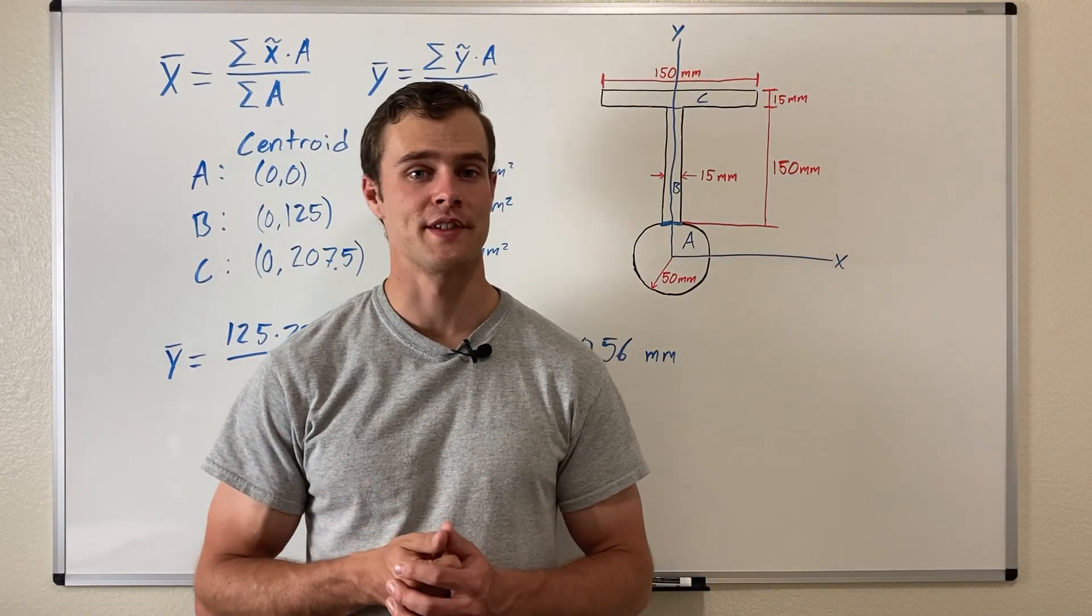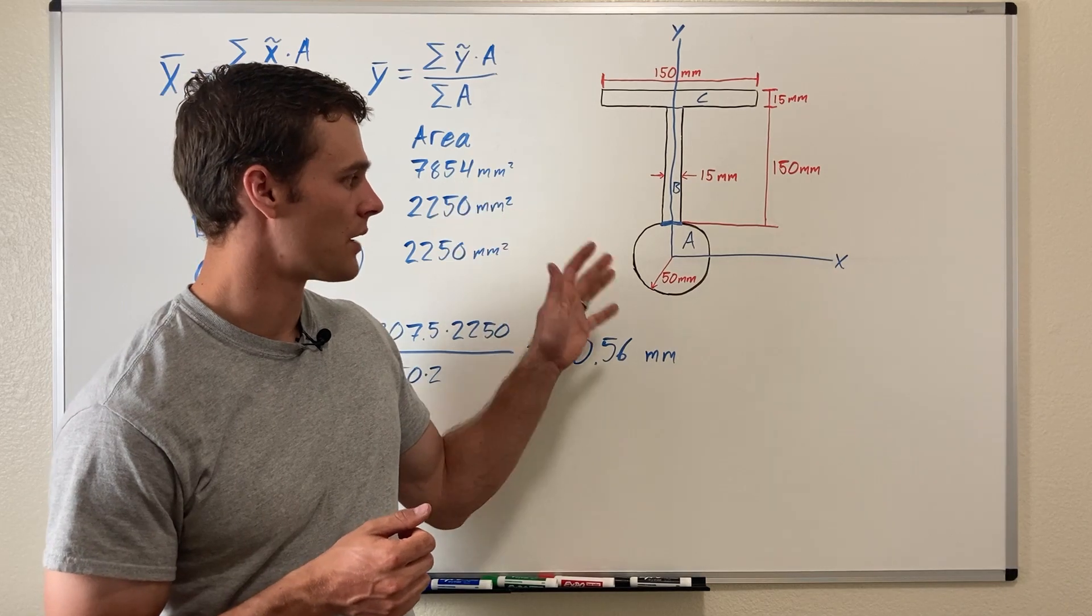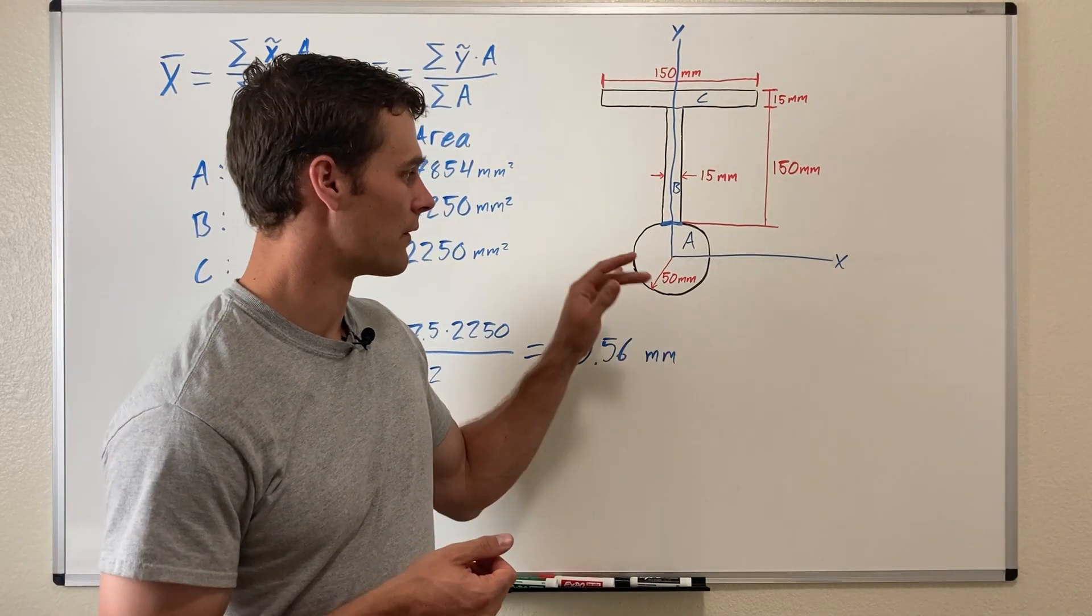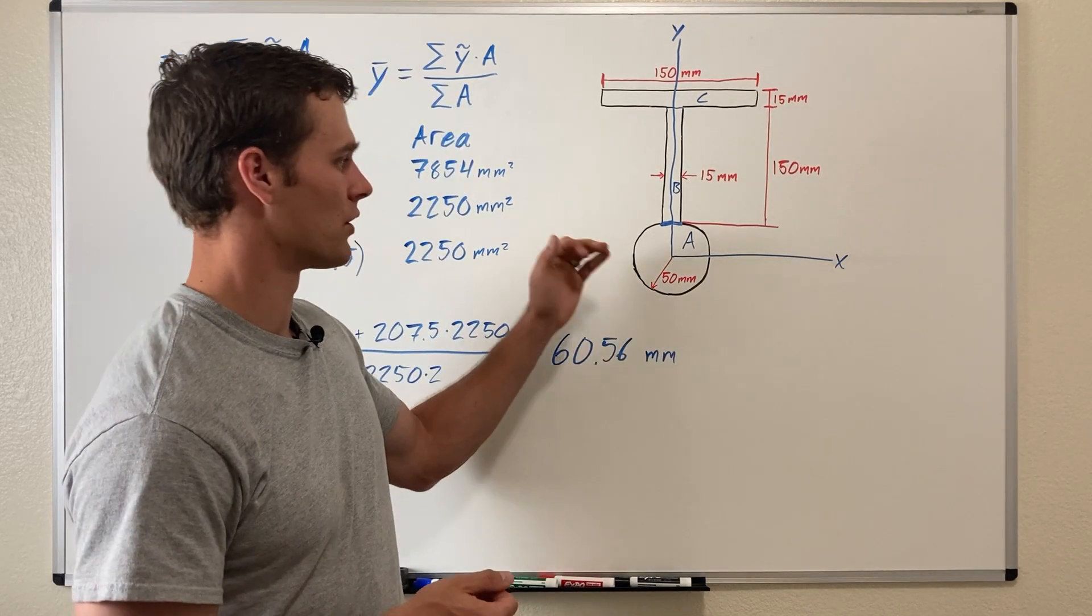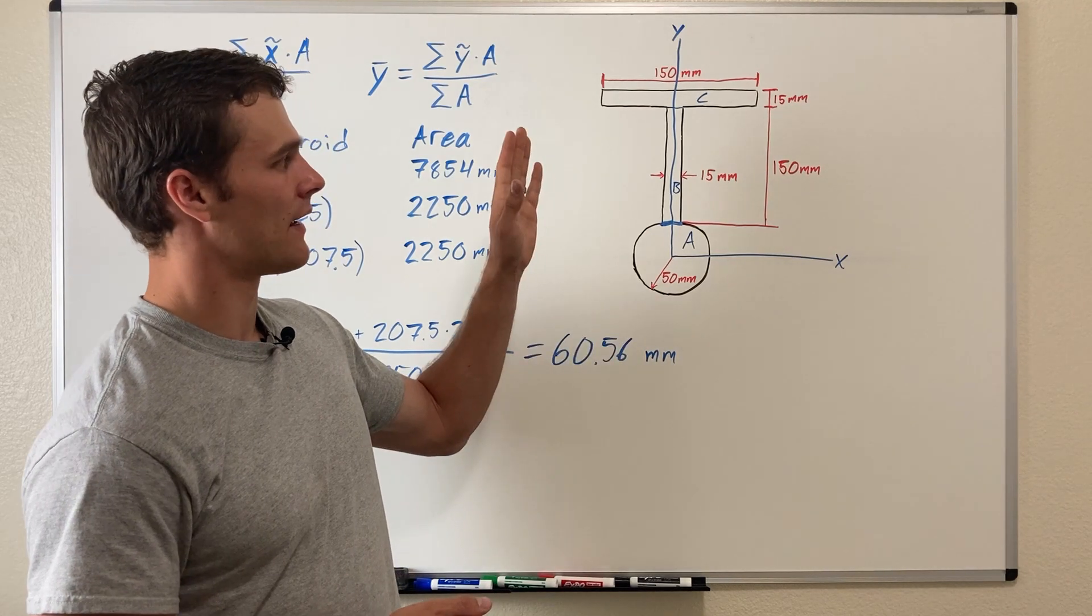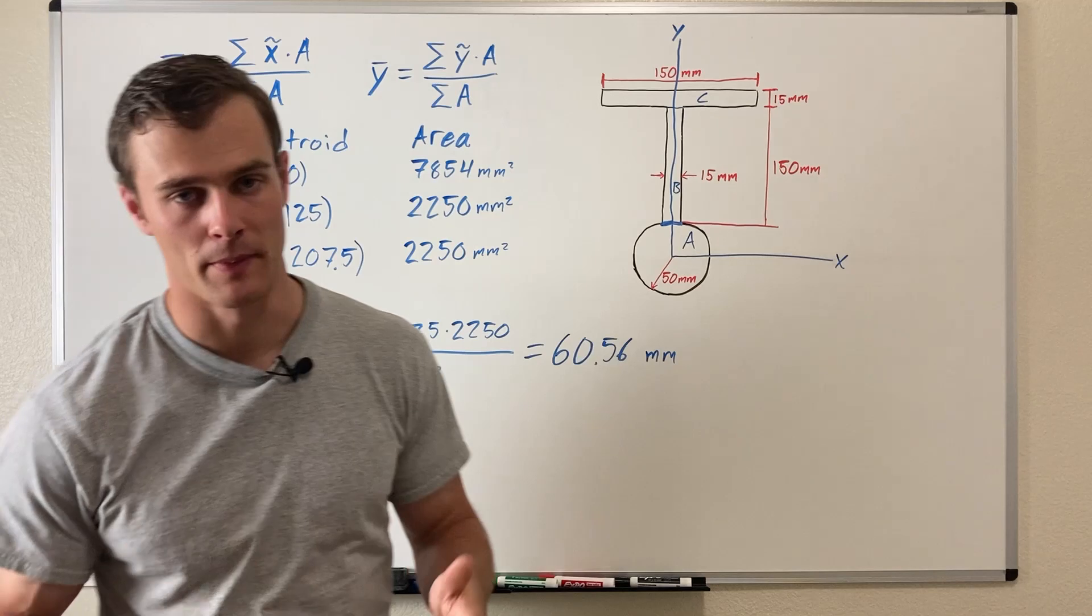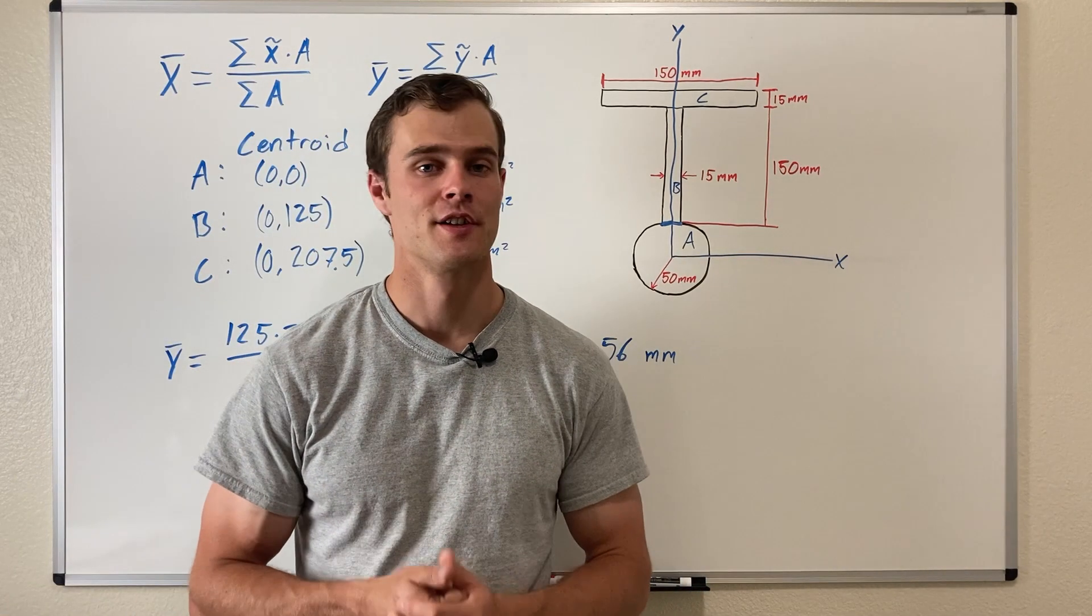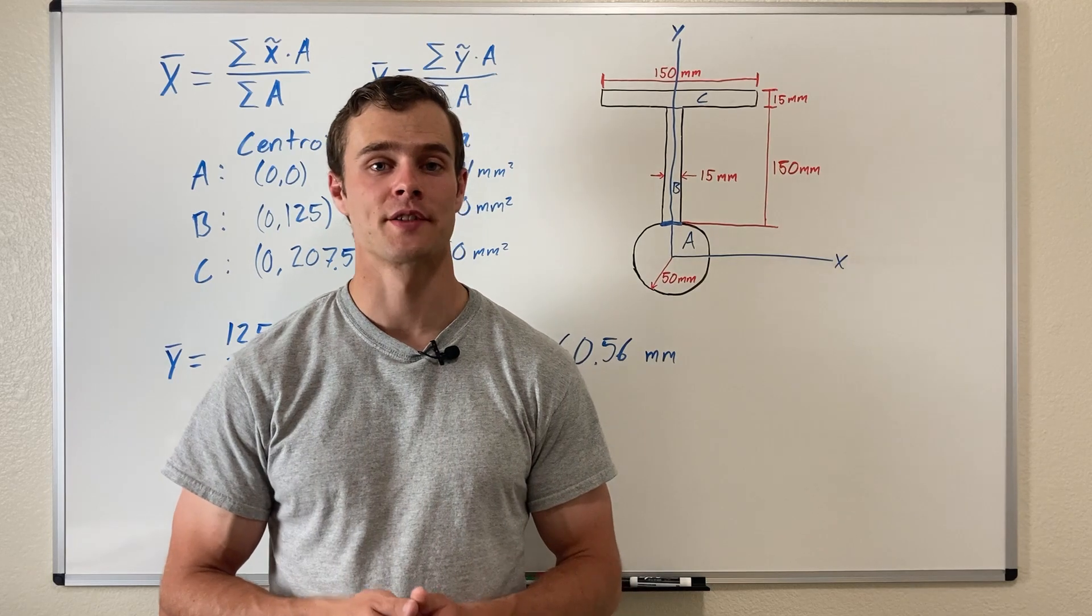So there's a pretty simple example problem of finding the centroid of an object. This was pretty simple because we only needed to find ȳ in this case, since the object was symmetrical about an axis and we placed our y-axis on that axis of symmetry, making it a little bit easier.